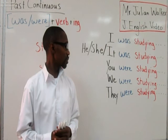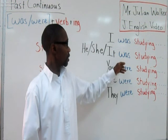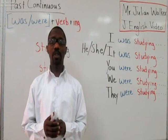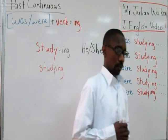You can see that he, she, it — the third person singular — uses was. Was is also used with I. And for you, we, and they, we use were. I'm going to come back with some more examples. Thank you.